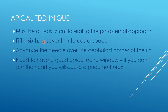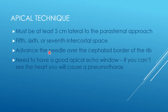The apical technique is probably my most favoured approach and one I would thoroughly recommend if you haven't considered it before. It's very important to be at least five centimetres lateral to the parasternal approach to avoid the internal mammary artery. As long as you're five centimetres lateral, you have quite a lot of freedom as to where you approach the pericardial fluid, defined very much by the anatomy. It's important to advance the needle over the cephalad border of the rib to minimise risk of damaging the intercostal vessels.